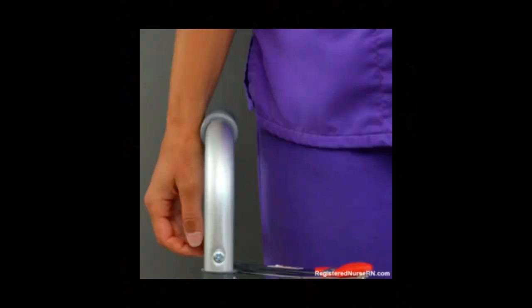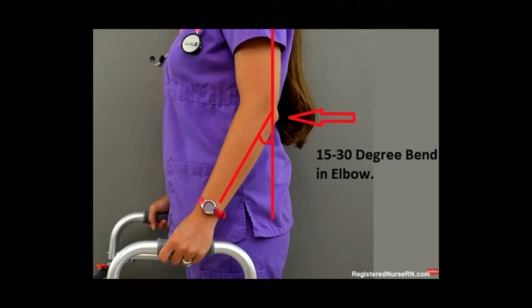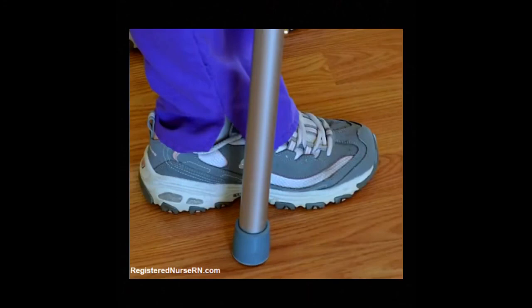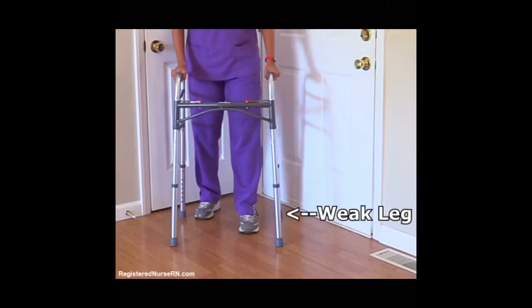Lastly, in using a walker, assist the client in ambulating. First, have the client stand in the center of the walker and grasp the hand grips on the upper bars. Second, lift the walker, moving it 6 to 8 inches or 15 to 20 centimeters forward, making sure all four feet of the walker stay on the floor. Next, take a step forward with either foot, and then follow through with the other foot.